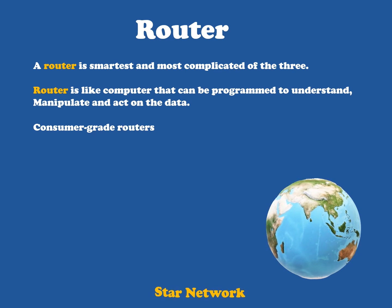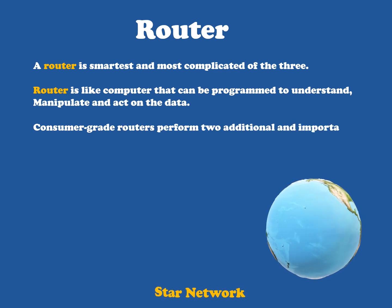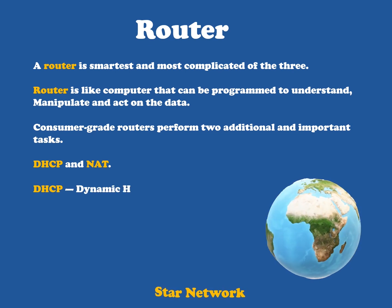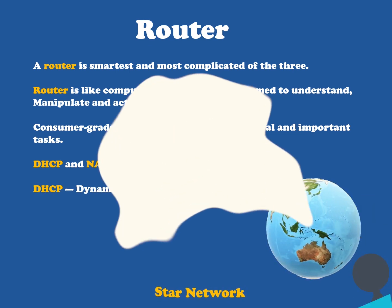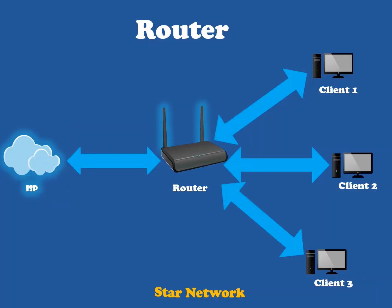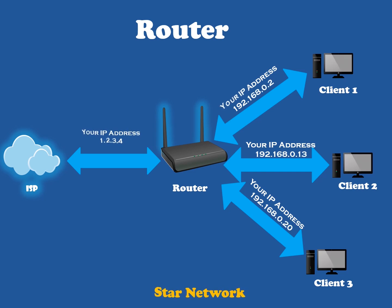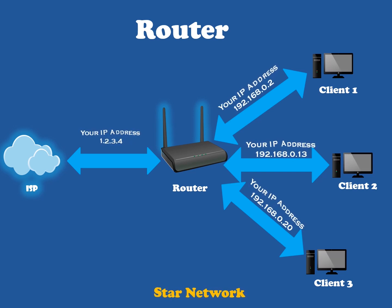Consumer-grade routers can perform two additional and important tasks. After a device initially connects to the network, it requests an IP address to be assigned to it, and a DHCP server answers with an IP address assignment. A router linked to your ISP providing the internet connection will request your ISP's server for an IP address — this will be your IP address on the internet. Your local computers, on the other hand, will request the router for an IP address, and these addresses are local to your network.